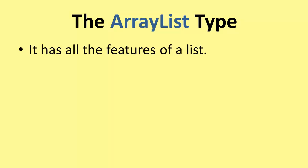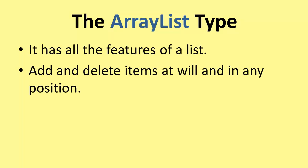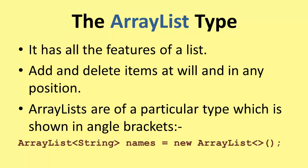The most common type of list is the ArrayList. It has all the features of the list, and you can add and delete items at will in any position. ArrayLists are of a particular type, shown in angle brackets. For example, here we have an ArrayList that will contain strings — strings in the angle brackets. It's going to be called names, and it's a new ArrayList. The angle brackets at the end of the new ArrayList show the type, but since we've already said which type it is — string — we don't actually have to put anything in there.